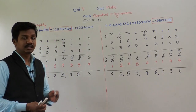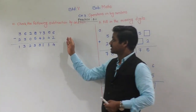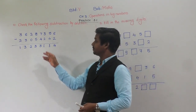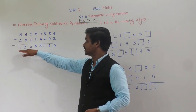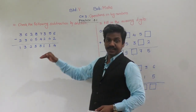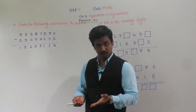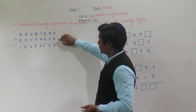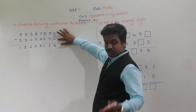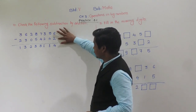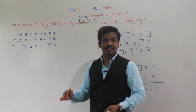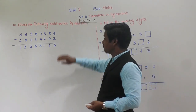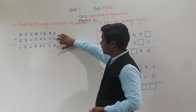Now question number 10: Check the following subtraction by addition. They have given a subtraction — two numbers are subtracted and the difference is also given. We have to check whether this subtraction is correct or wrong by addition. There are three numbers: the greatest number, the smallest number, and the difference. We need to add the smallest number and the difference.